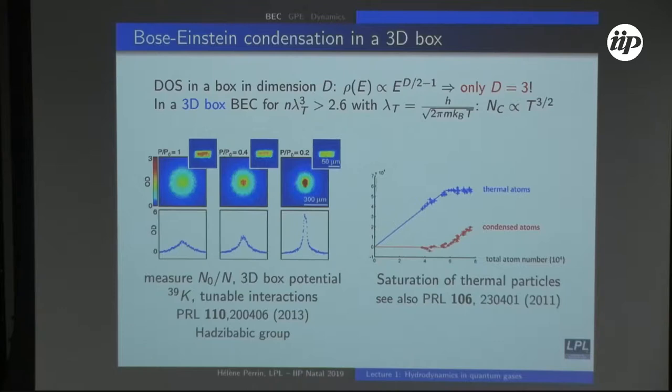Evaporation is used to control temperature — the thermal bath is controlled by an RF knife or the depth of the box. The experiment is repeated with various atom numbers at a set temperature, with the temperature determined by the gas itself and collisions given the trap depth.